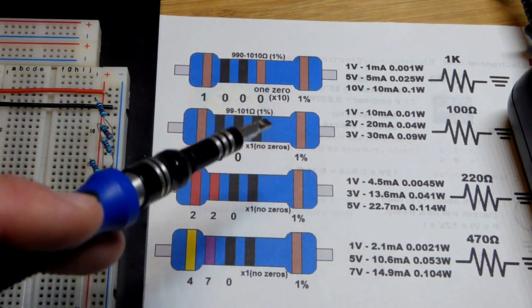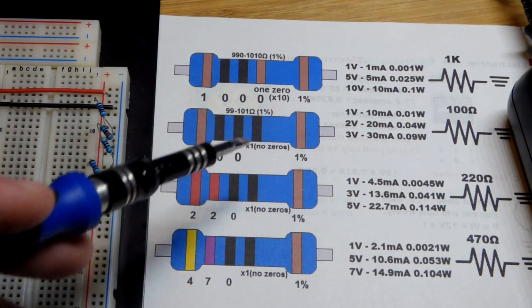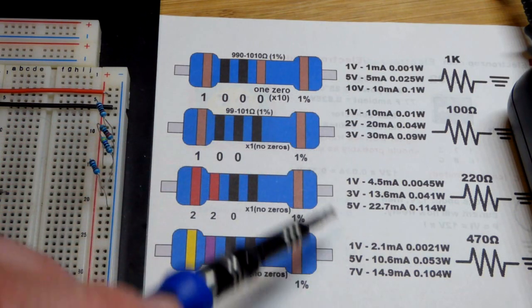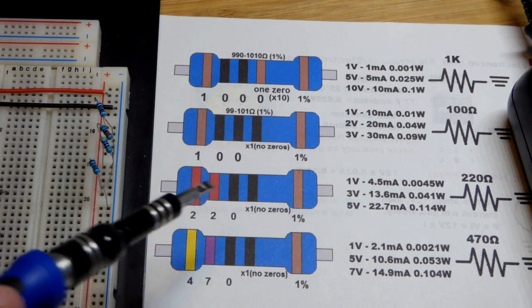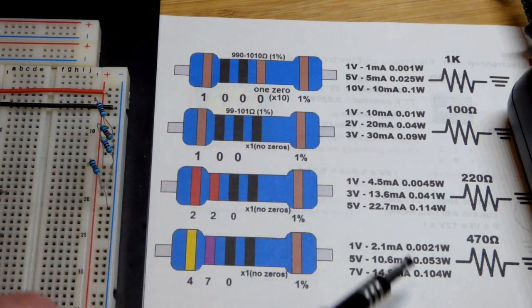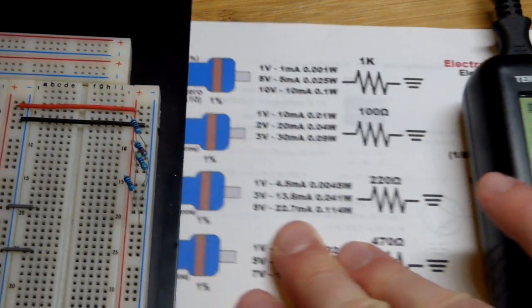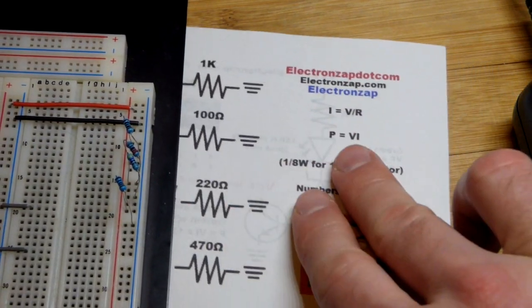I already did some of the math. The resistors, they mostly limit current. And so I wrote with the certain voltages across these particular resistors how much current we will get. And also I wrote how hot they will get at different voltages.